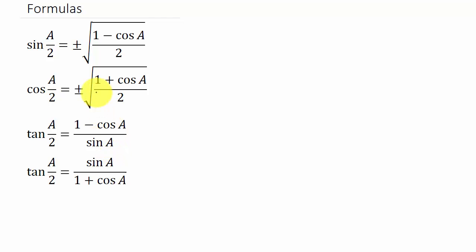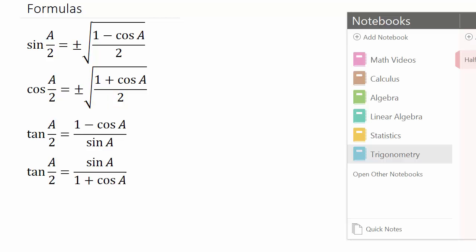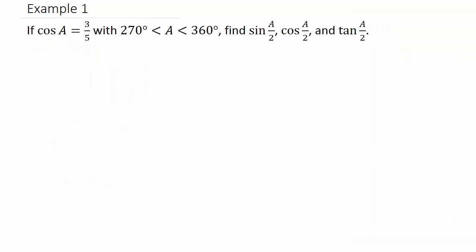Let's go ahead and work an example. I'm going to do a couple of examples with these half angle identities, one problem per video. The first example: cosine a is 3/5 and angle a is between 270 and 360 degrees — that means we're in the fourth quadrant. We want to find sine of a/2, cosine of a/2, and tangent of a/2.